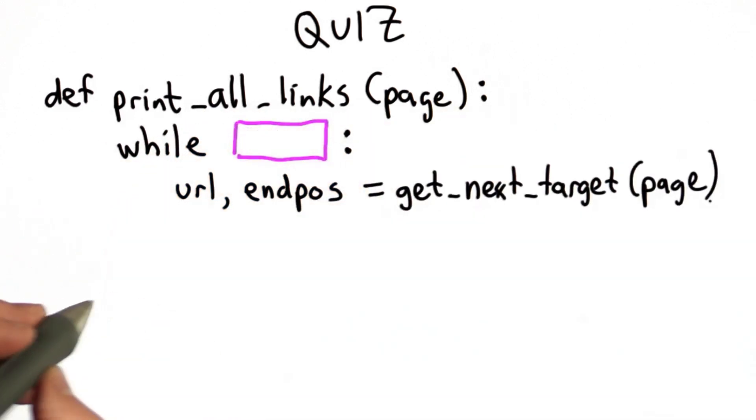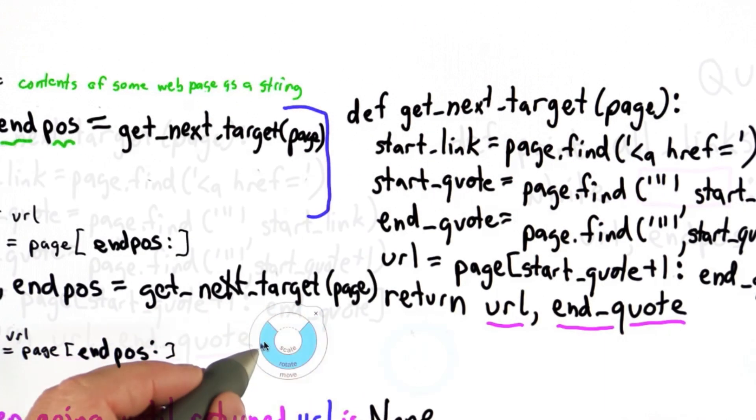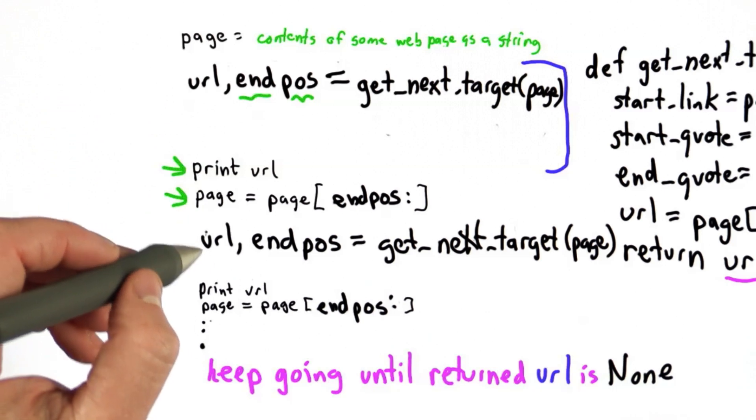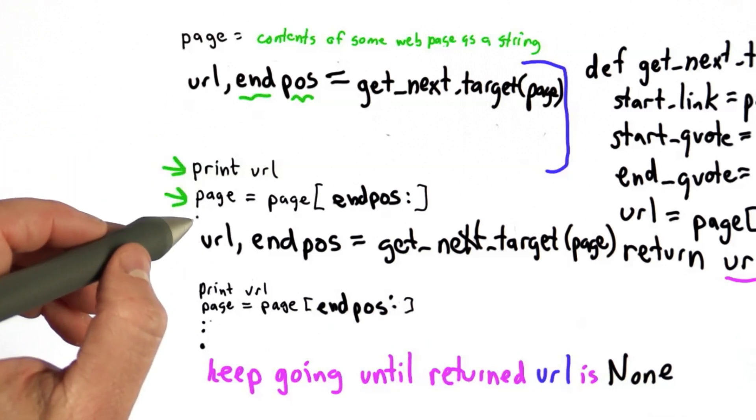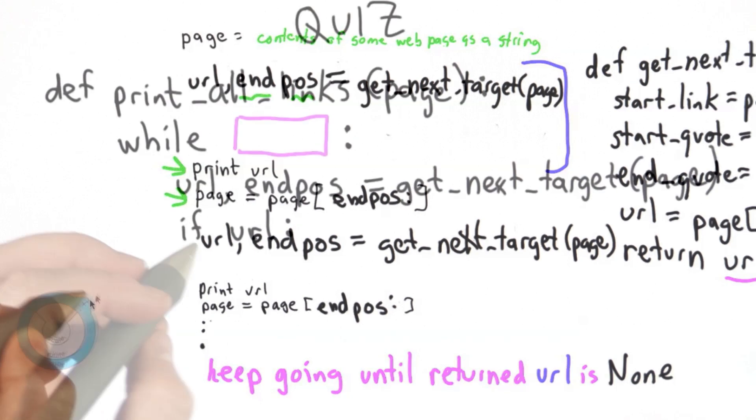Now what we need to do is check whether we got a valid URL. So what we were doing here, we assumed that we always got a valid URL, and we printed it out, and we kept going. But we need to test whether the URL that we got back is none. So that's what we'll do.